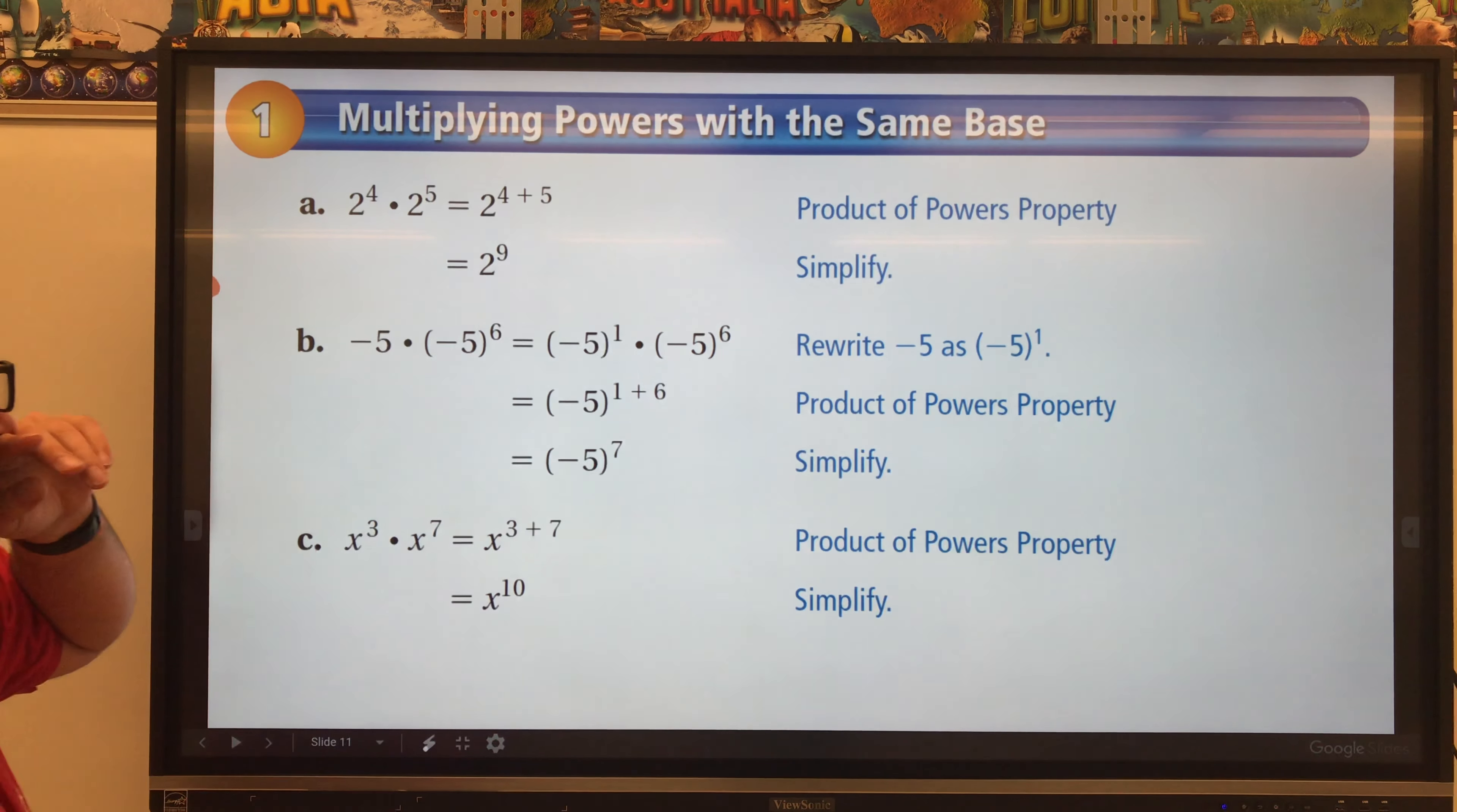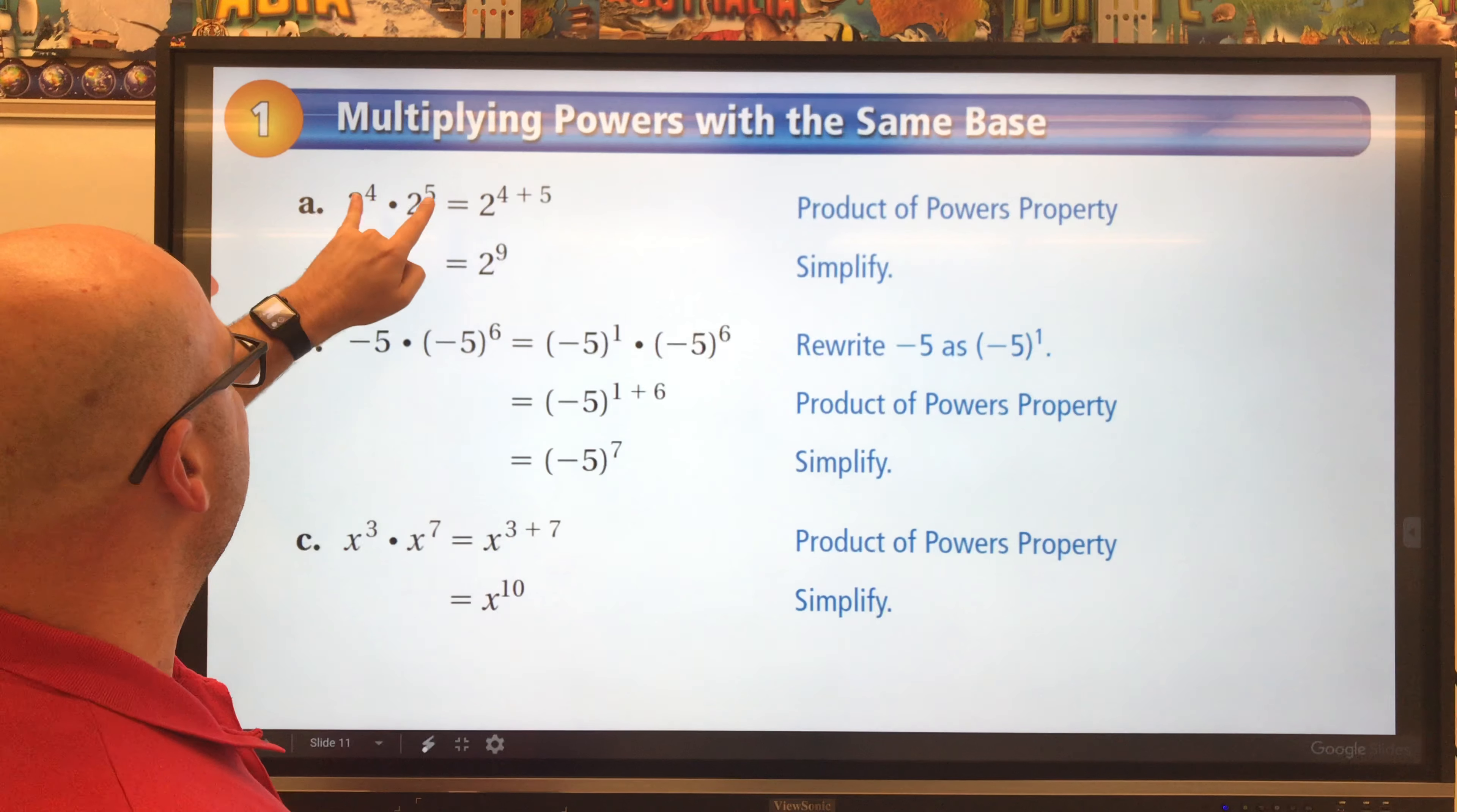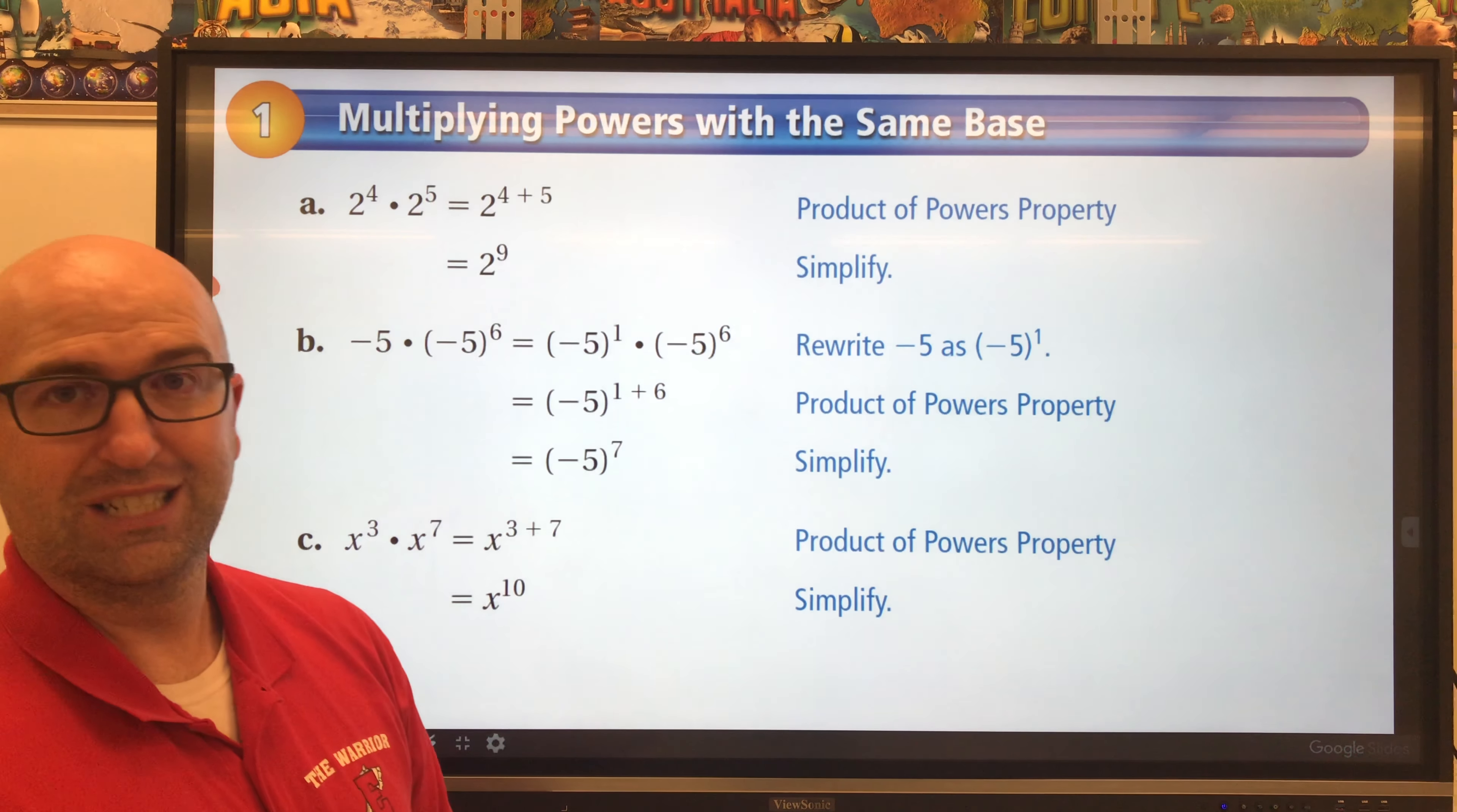So let's go back. We're multiplying powers with the same base. This is that first example we looked at, so we're going to go through it again. I have the same base of two. Two to the fourth times two to the fifth. We add the two exponents since we're multiplying those together. Four plus five gives us two to the ninth.